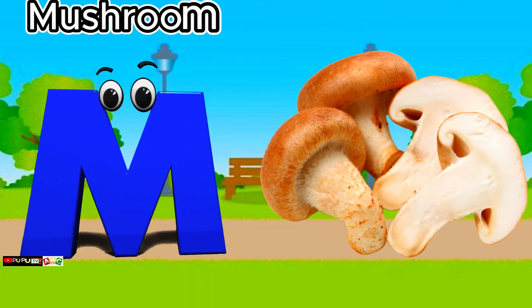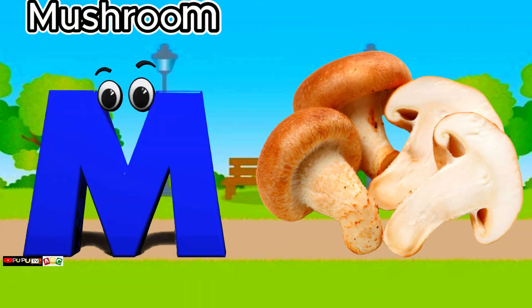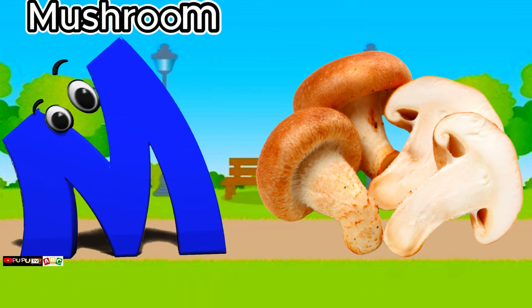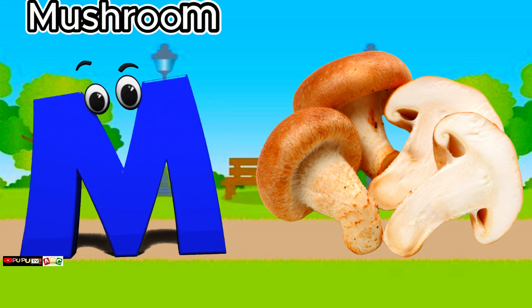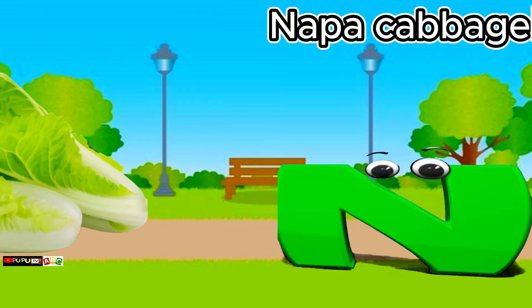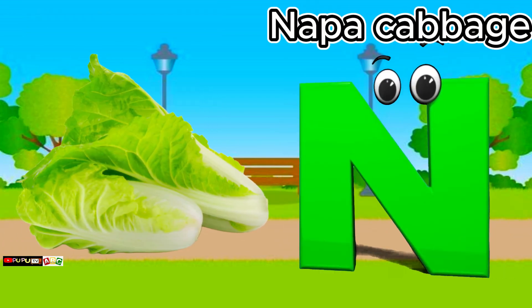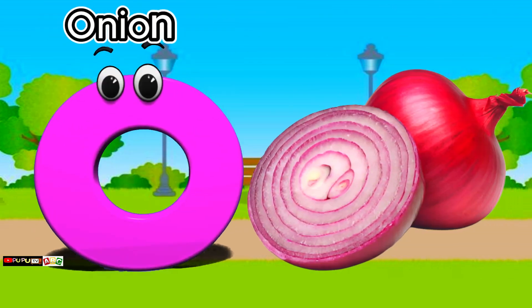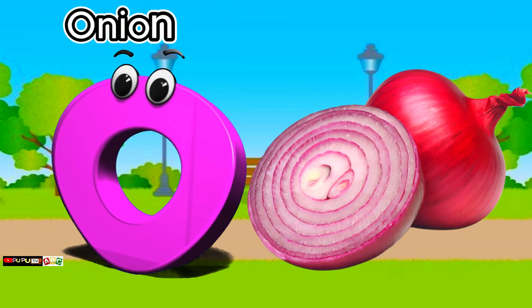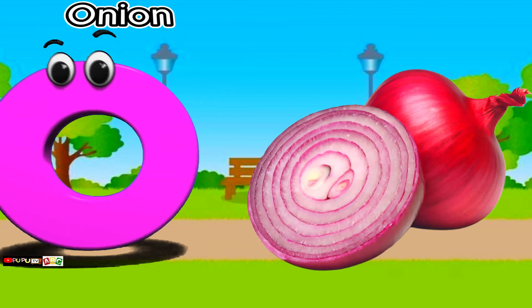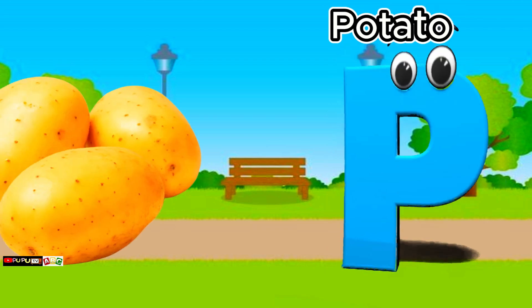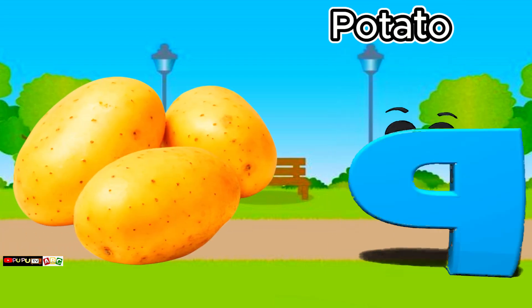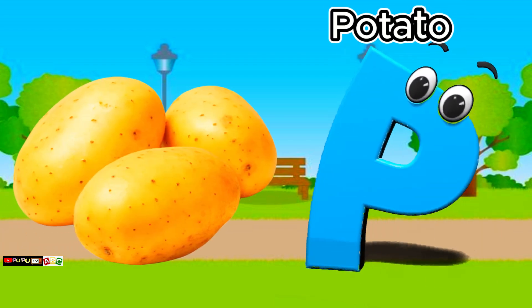M is for mushroom. M, m, mushroom. N is for napa cabbage. N, n, napa cabbage. O is for onion. O, o, onion. P is for potato. P, p, potato.